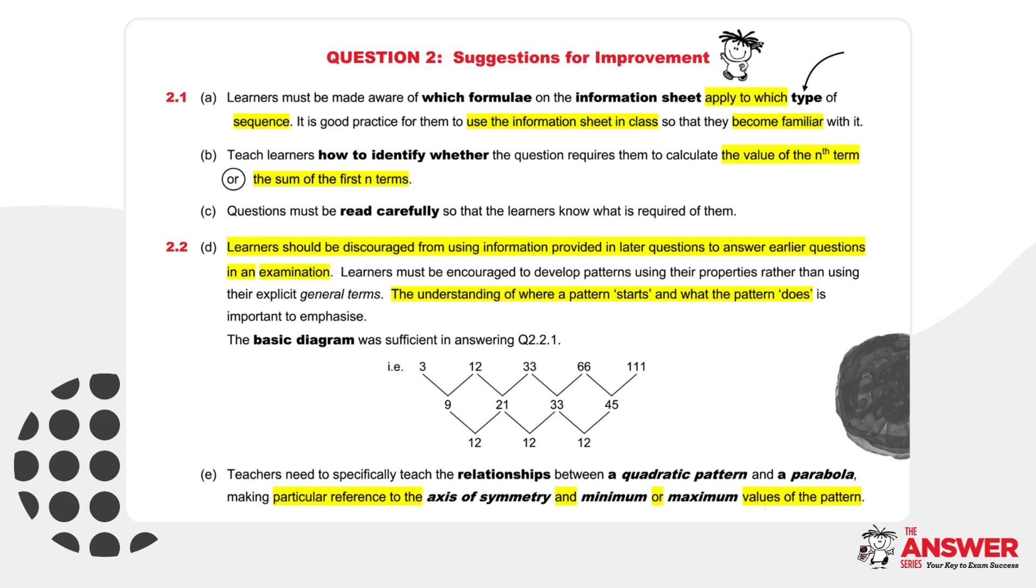Then lastly, here are some suggestions for improvement for question 2. For question 2.1: A. Learners must be made aware of which formulae on the formula sheet apply to which type of sequence. It is good practice for them to use the information sheet in class so that they become familiar with it. B. Teach learners how to identify whether the question requires them to calculate the value of the nth term or the sum of the first n terms. C. Questions must be read carefully so that learners know what is required of them.